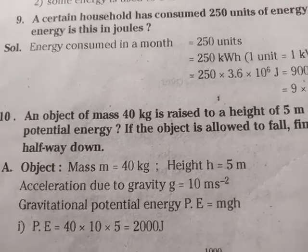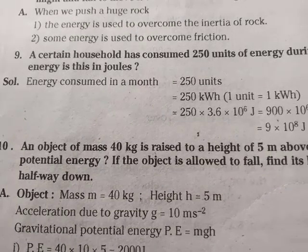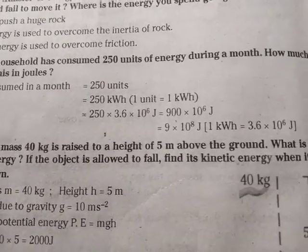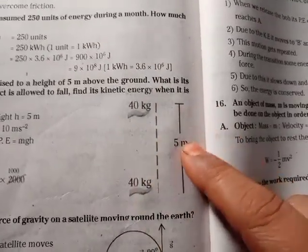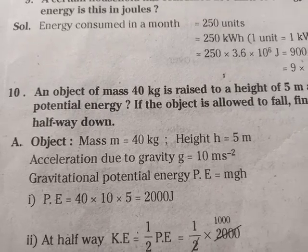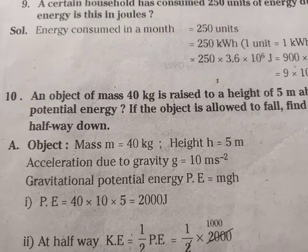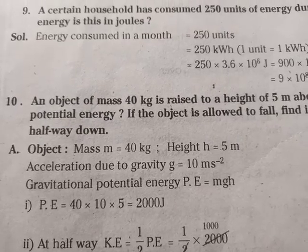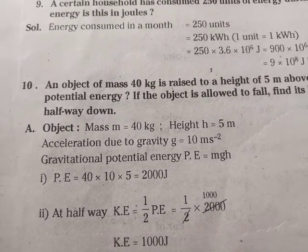10th Question: An object of mass 40 kg is raised to a height of 5 m above the ground. What is its potential energy? Answer: Mass M = 40 kg, Height H = 5 m, Acceleration due to gravity G = 10 m/s². Gravitational potential energy PE = MGH = 40 × 10 × 5 = 2000 J.